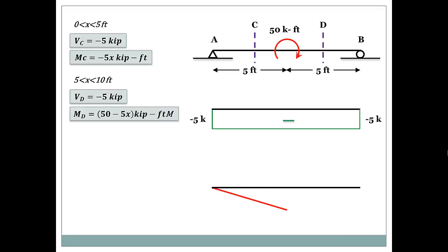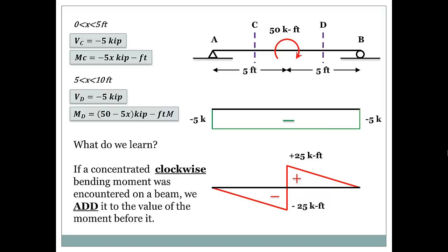At X equals five, 50 minus 5 times 5 gives 25. So at mid-span the moment jumps to plus 25, and at the end it returns to zero. The minus 25 and plus 25 connect to form the complete moment diagram. The key takeaway: if a clockwise concentrated moment is applied, add it to the previous moment value; if counter-clockwise, subtract. This is our shortcut for drawing shear and bending moment diagrams.